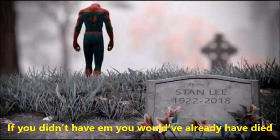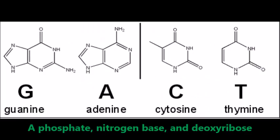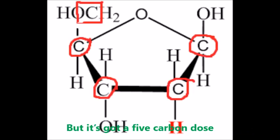Let's talk about the nucleotide. It's made up of three things: a phosphate group, nitrogen base, and deoxyribose. It's a sugar molecule just like glucose, but it's got a five-carbon dose. Don't call it fructose or I'll say adios.